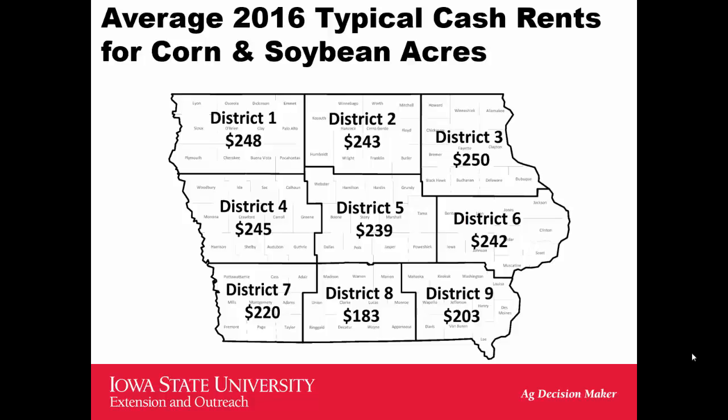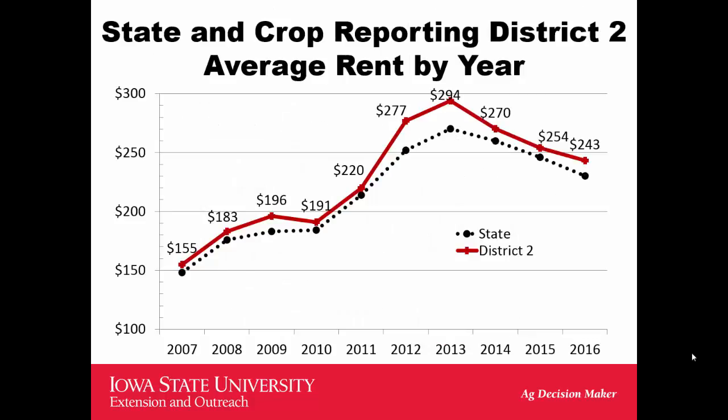There are significant differences in the range of rents within the three different quality categories. Down in South Central Iowa there's a lot more marginal land, with some county corn yields in the 125–135 bushel range, which depresses rents. In crop reporting District 2, we peaked out in 2013 at about $295–$300 an acre, then declined down to about $240. We've had three years of decline, and I think we'll see a fourth.